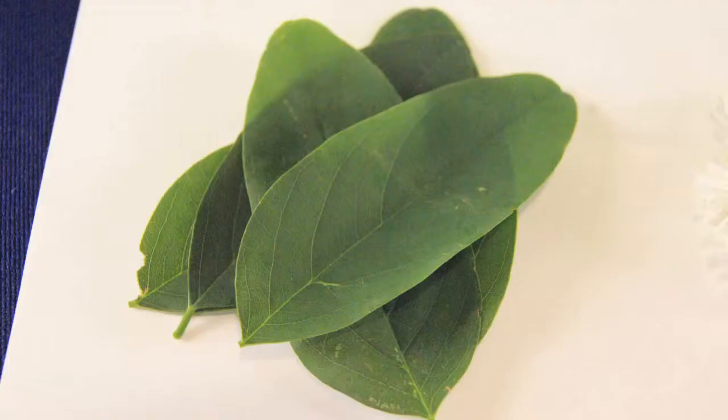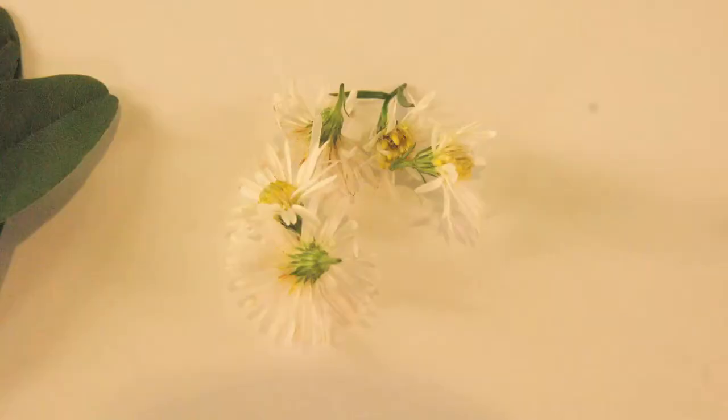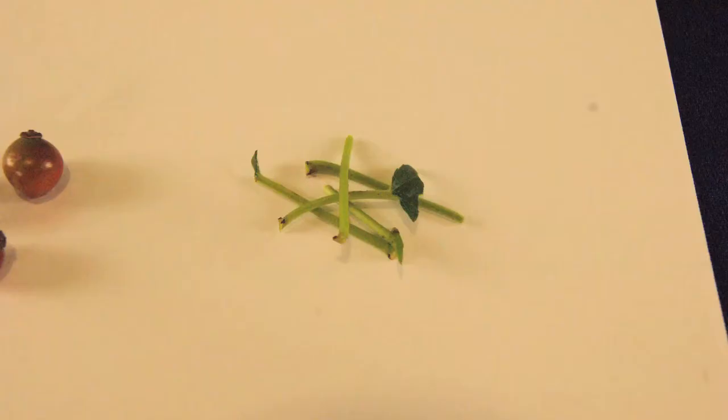Examples of plant tissues that can be homogenized in the Bullet Blender are leaves, flowers, fruits, and soft stems.